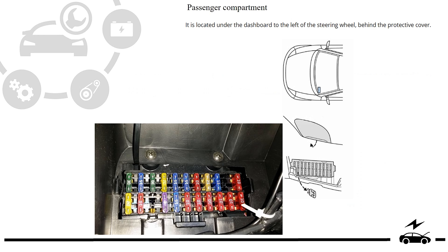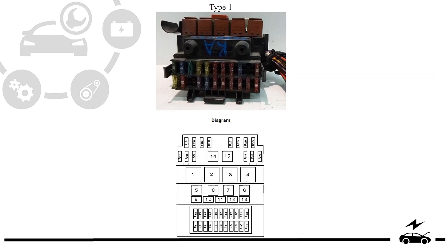Passenger compartment fuse box: location, photo. Type 1 diagram.